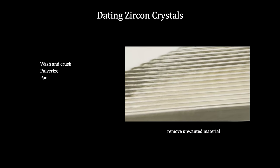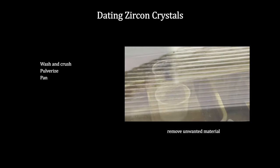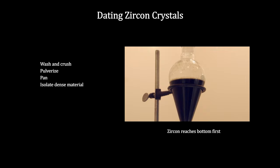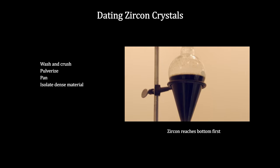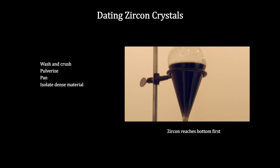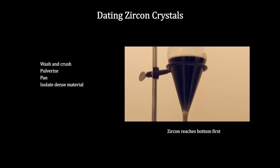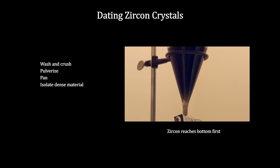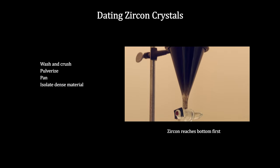At this point, they are down to around a few hundred grams of material — just seven ounces out of the original 44 pounds. They then further separate the minerals by density through a heavy liquid; the densest materials reach the bottom first. This takes advantage of zircon's extreme density over most other minerals.